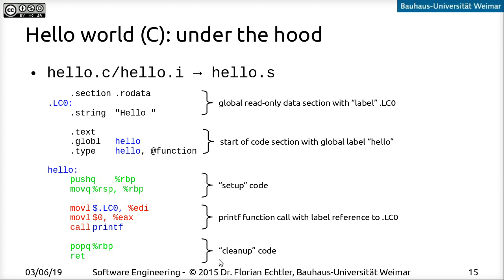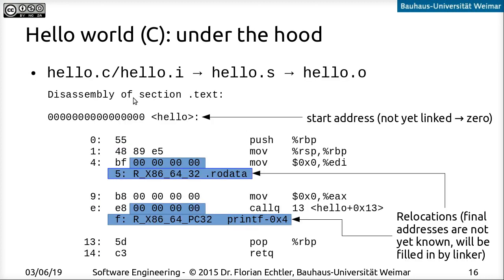The important inner part of the assembler code first loads a reference to the string label we want to print, then calls the printf function. This assembler code is a still-humanly-readable version of machine code. When we run it through the assembler, we get a .o object file containing actual machine code. However, some aspects are not yet ready to run — for example, the start address is all zeros, meaning it hasn't been through the linker yet. References in the code are also still zero.